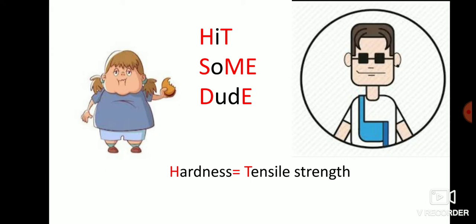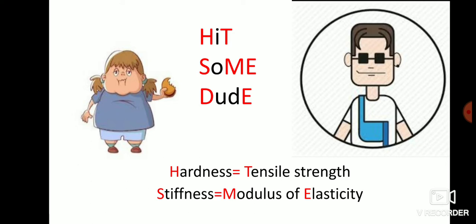Focus only on the red-colored letters and ignore the black ones. In 'SOME': S = Stiffness, ME = Modulus of Elasticity. So stiffness is always equal to modulus of elasticity. In 'DUDE': D and E stand for Density = Elongation. So whenever a question asks what density is proportional to, the answer is elongation.